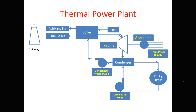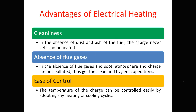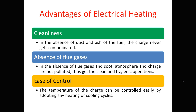So this is the entire structure of a thermal power plant. Now let us see how electrical heating is fruitful and advantageous compared to this power plant — we will compare almost all points against this power plant. The first advantage is cleanliness: obviously there is no dust and ash in electrical heating, so the plant is clean.